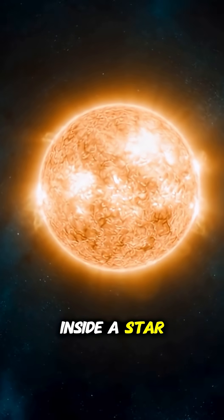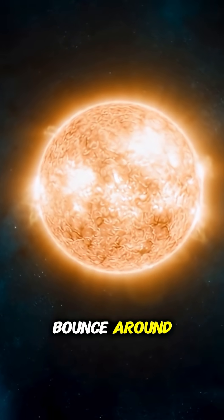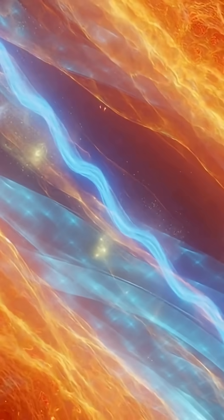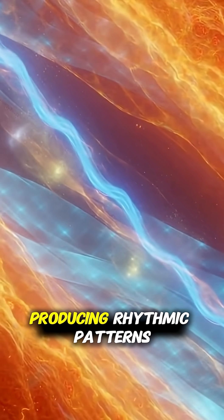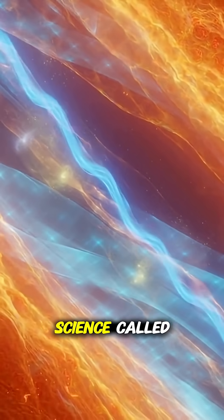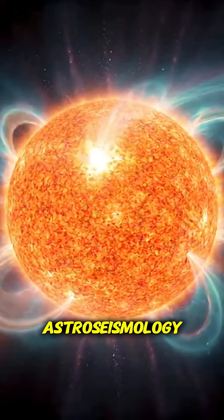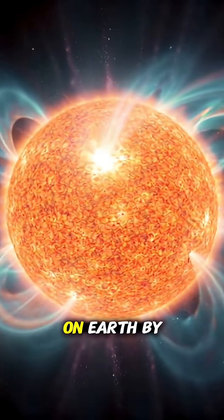Inside a star, waves of energy bounce around, trapped by layers of hot gas and plasma. These oscillations make the star expand and contract, producing rhythmic patterns that can be studied through a science called asterosismology, the stellar version of how we study earthquakes on Earth.